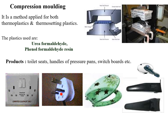These are some products made by compression molding. Although it is primarily for thermosetting plastics, it can also mold thermoplastics. Plastics used include urea formaldehyde, phenol formaldehyde, and bakelite. This is the actual compression molding machine.